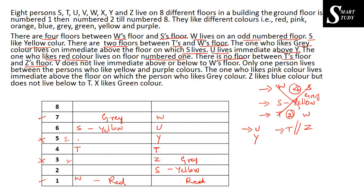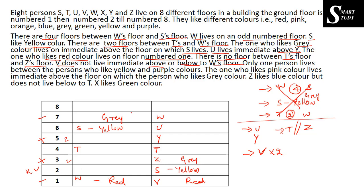The next information is that V does not live immediately above or below W's floor. So V cannot be placed on floor number two in the first case. In the second possibility, if V does not come immediately above W, only one place is left — floor number one — so V would be placed there. These details are particularly useful for resolving the first possibility.